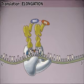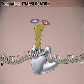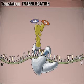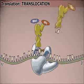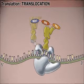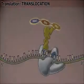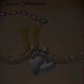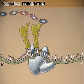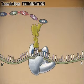The second shifts into the site formerly occupied by the first, and the third charged tRNA joins the complex. The process repeats itself, lengthening the polypeptide, until the complex arrives at the stop codon.